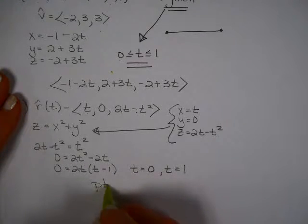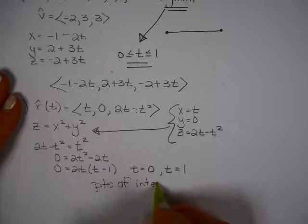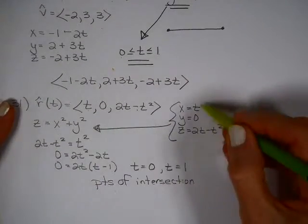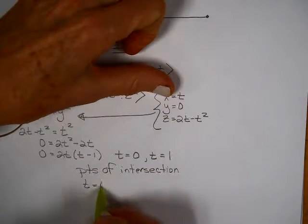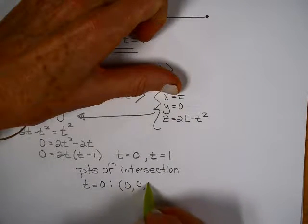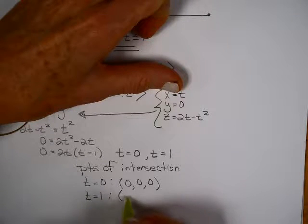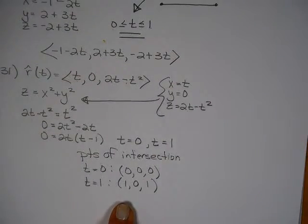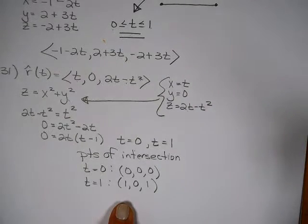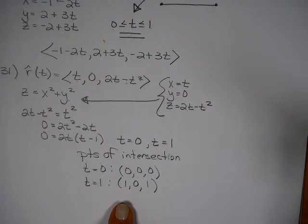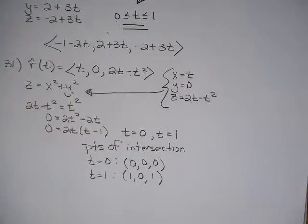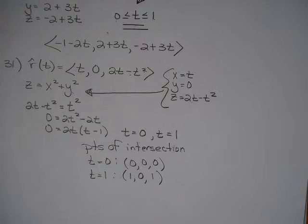This is not the answer. They want the points of intersection. So the points of intersection, you go right back up here. If T is 0, then you get the point 0, 0, 0. If T is 1, I'm getting the point 1, 0, 2 minus 1, which is 1. So those are the two points where this curve intersects this shape. Okay, this is not what you're looking at. But this is the idea. You've got a shape here and a shape here, and you're looking at what does it look like when it intersects it. That's the idea.